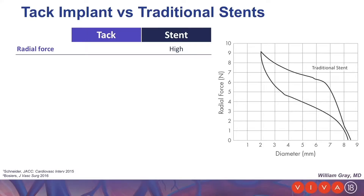The TAC is different from a traditional stent in that the force curve generated by the TAC is significantly different. A traditional stent, when compressed, will exert increasing force with increasing levels of compression, such that once the stent is severely compressed, the outward radial force is quite high. This differs in the TAC in that as you compress the TAC, the outward radial force is flat, and you don't see an increasing force curve over that increase in compression.